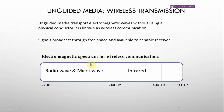This is the figure of the electromagnetic spectrum for wireless communication. For radio waves and microwaves, it uses 3 kHz to 300 GHz. And for infrared, it uses 400 THz.